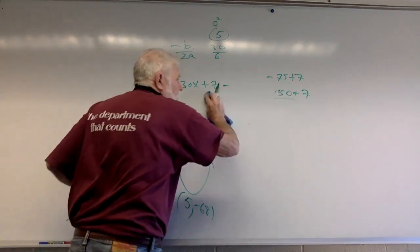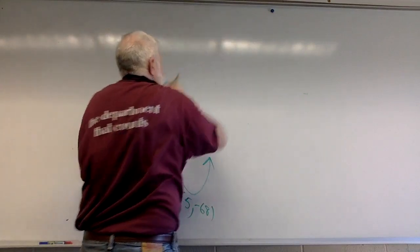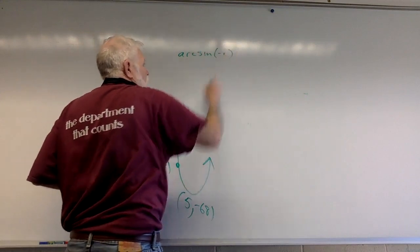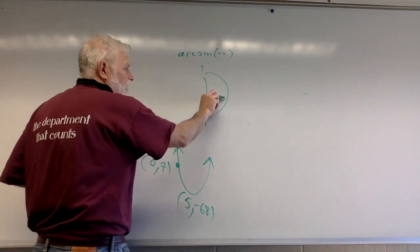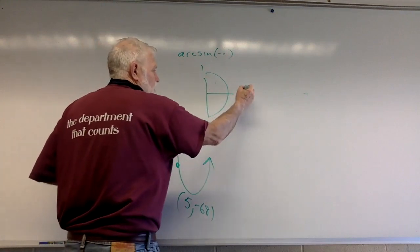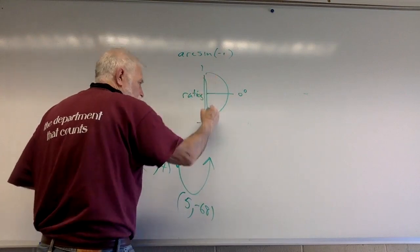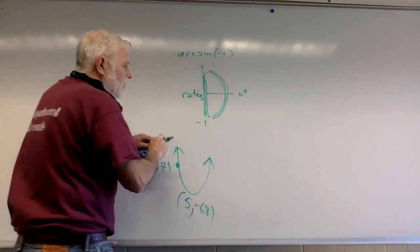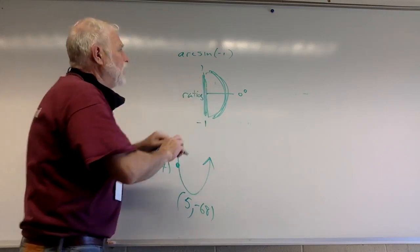What else did we practice? We practiced arcsin(-1). There's your arcsin, goes up to positive 1, negative 1. We talked about how do I get from 0 degrees, because these are the ratios. Your ratios are on this part of the graph, your angles are over here. So how do I get from 0 degrees to -1? I'm going down 90 degrees.